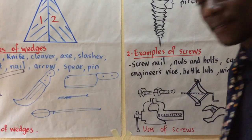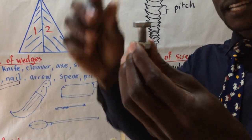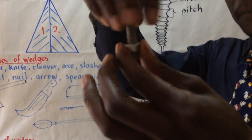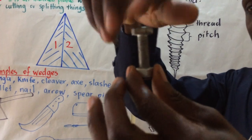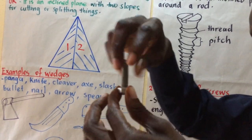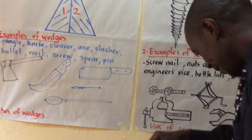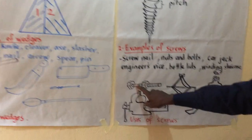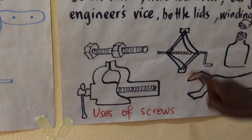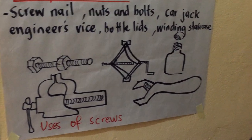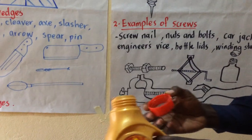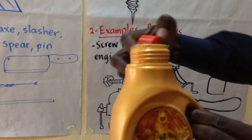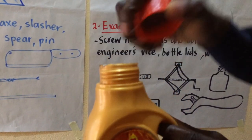Then I have nuts and bolts. The bolt is this one at the top and this is the nut. Some people are already thinking about their uses. Then we have the car jack. These are nuts with bolts. And we have bottle tops — bottle tops use a screw mechanism.